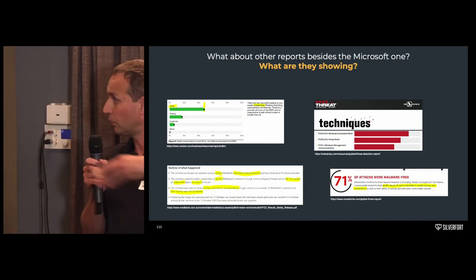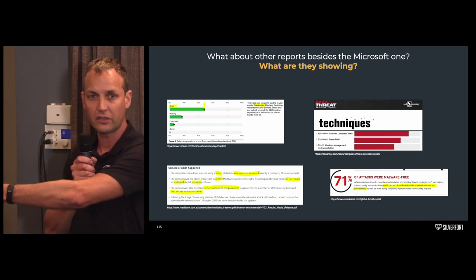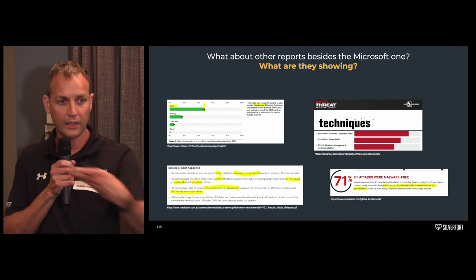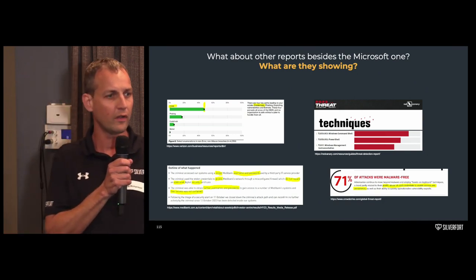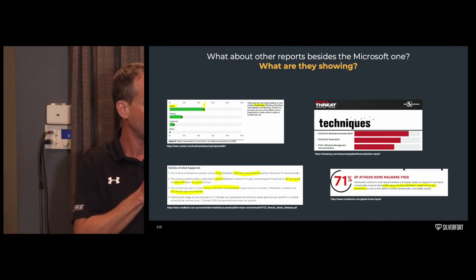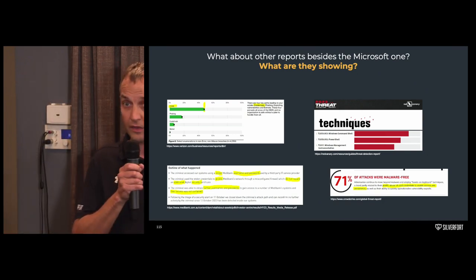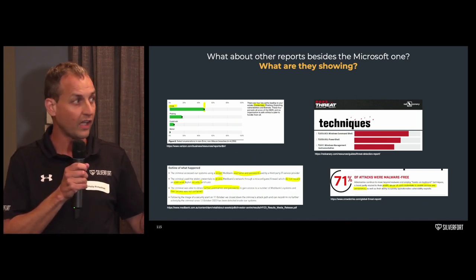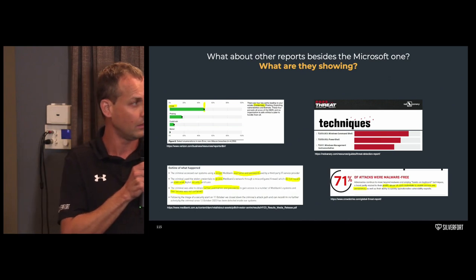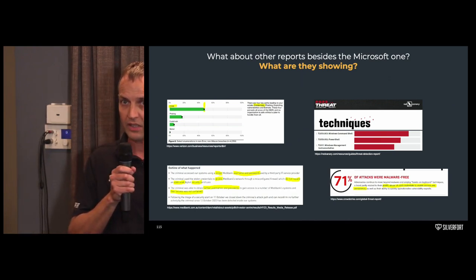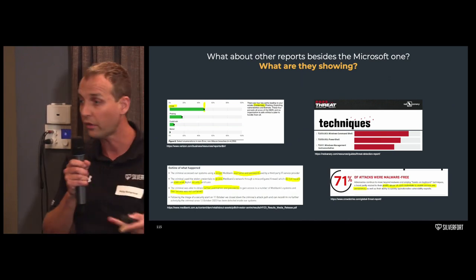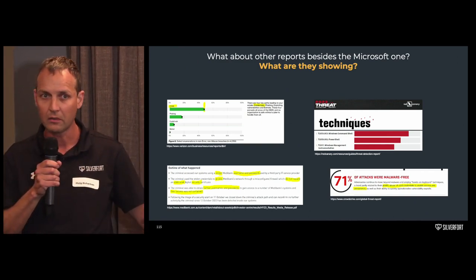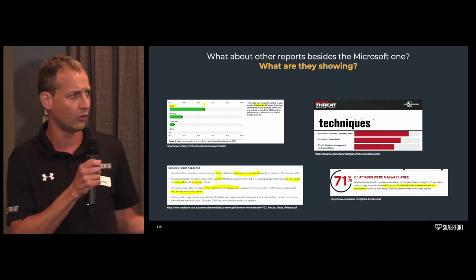We talked about the ACSC Essential Eight and the maturity levels — one, two, three. How do you bring those controls to legacy environments? What about admin interfaces? As we saw in the Red Canary slide, attackers are using PowerShell, WMI, PsExec — command line tools that do not have native MFA capabilities. How do you apply these controls to something like that?